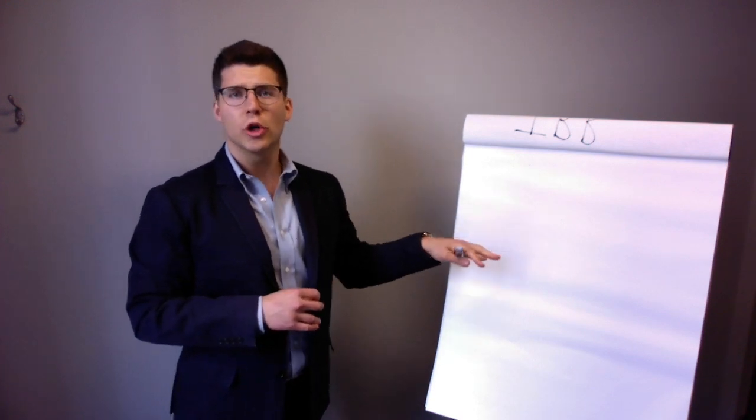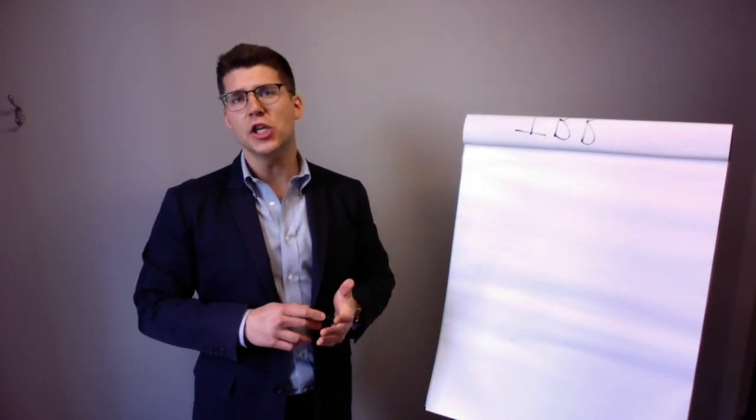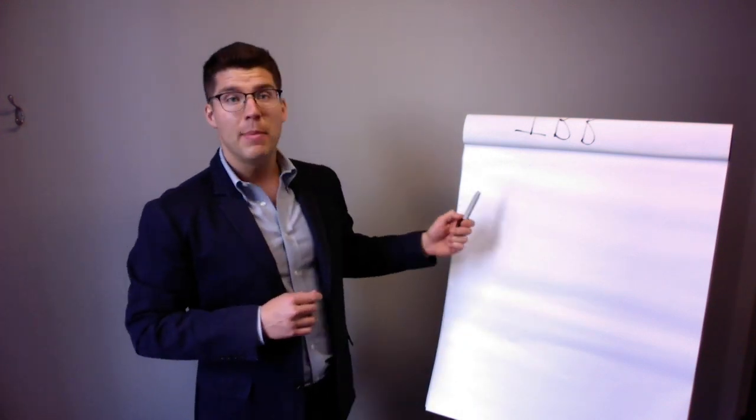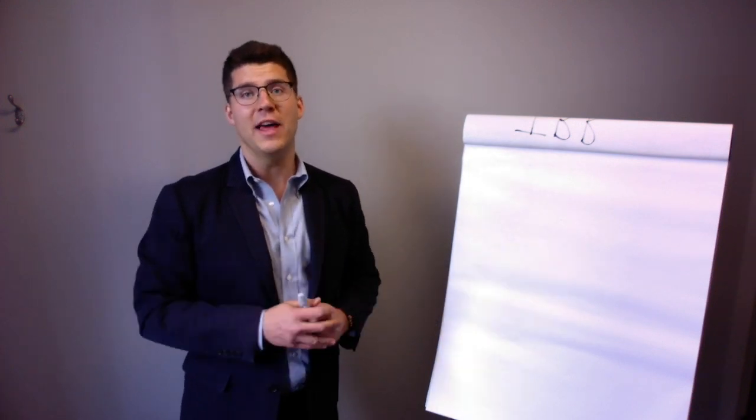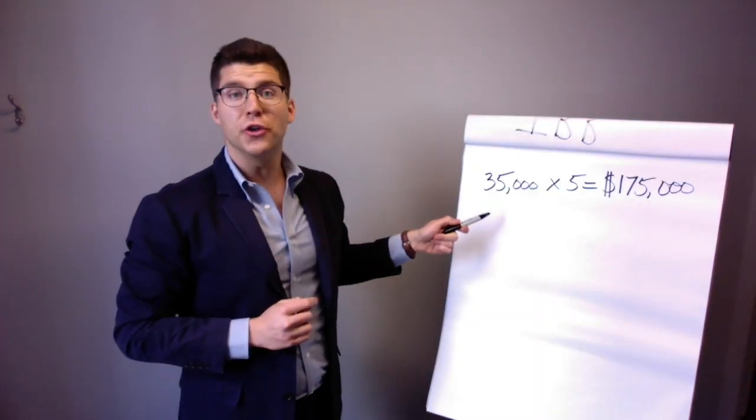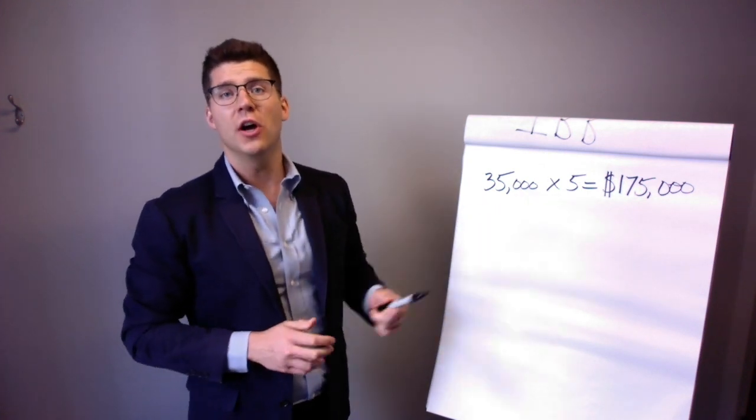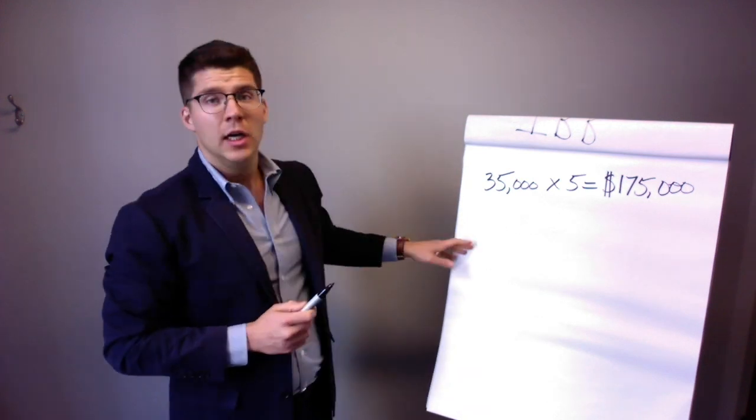So let's start with cash flow. Let's say that after your expenses and mortgage payments, you're left with $35,000 a year in cash flow. We can multiply that by the number of years to get our total cash flow over the term of that investment. So $35,000 a year times five years equals $175,000 total.